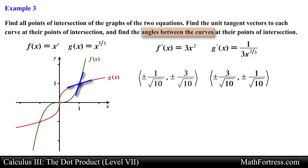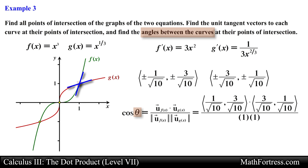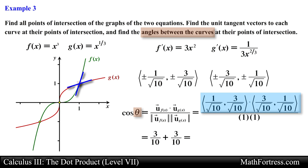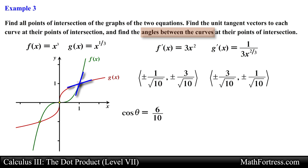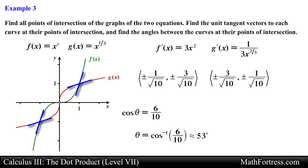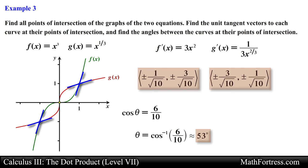We use the geometric definition of the dot product to find the angle between the tangent vectors at (1, 1). Computing the dot product and dividing by the product of the magnitudes, we obtain the corresponding value. Taking the inverse cosine and approximating to the nearest degree, we obtain 53 degrees. The unit vectors and angle at point (−1, −1) are exactly the same as at (1, 1) because of the function's symmetry.